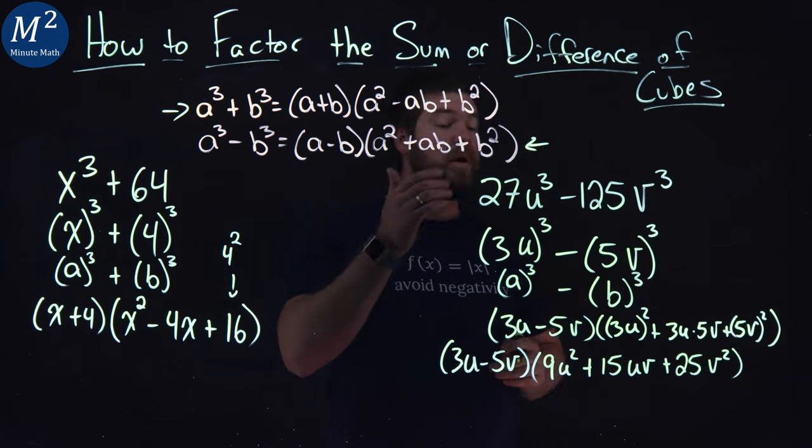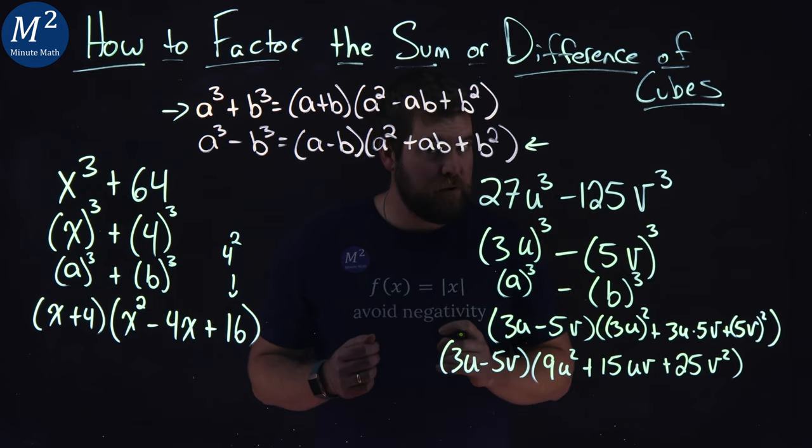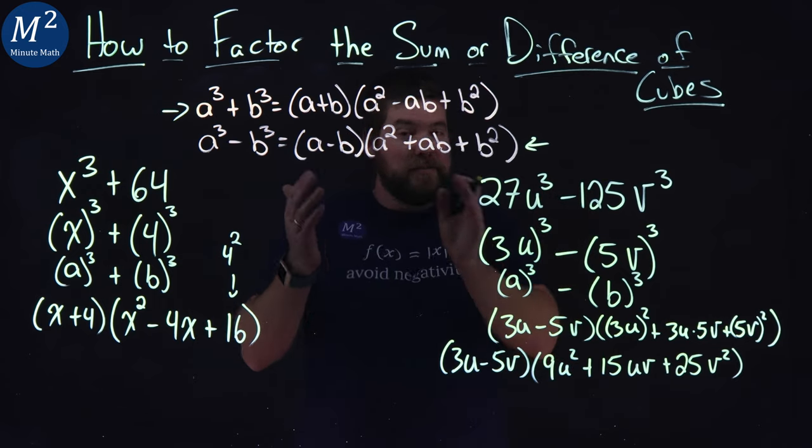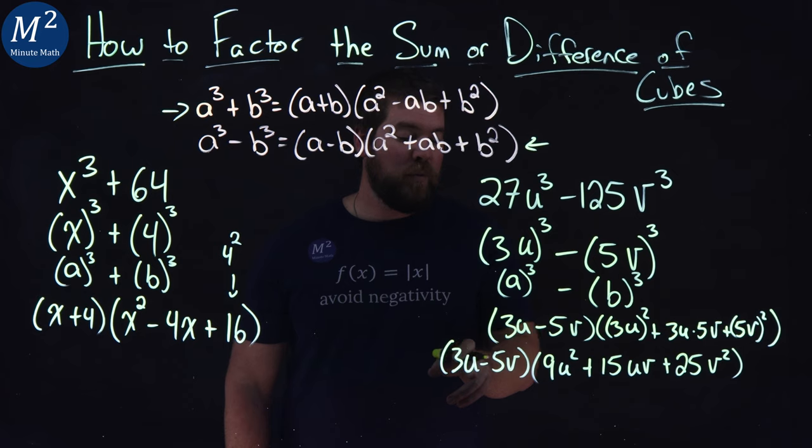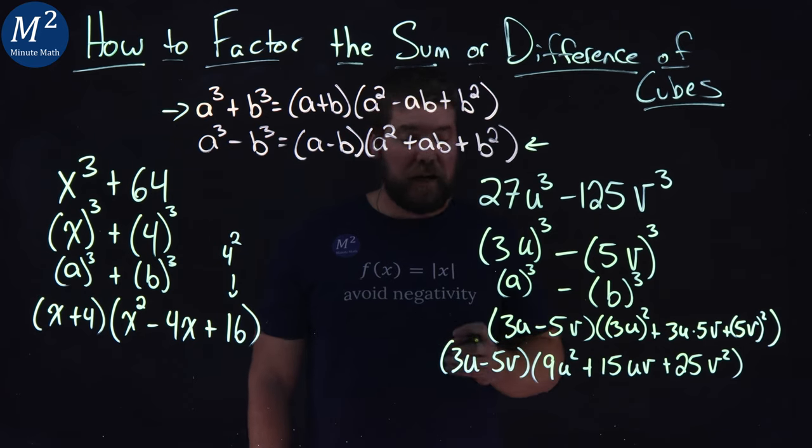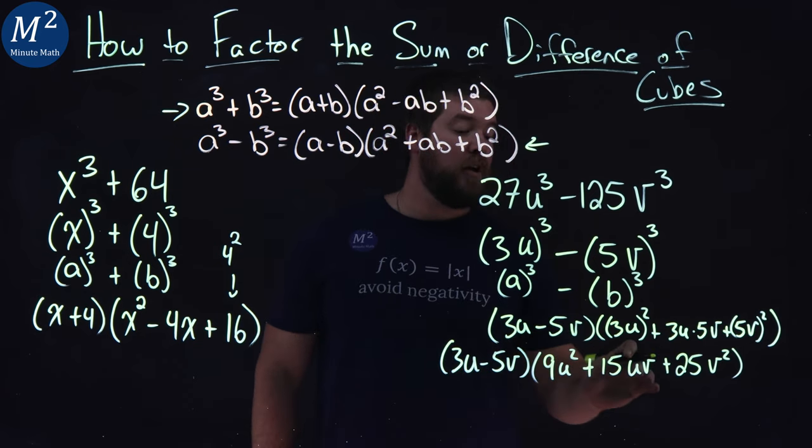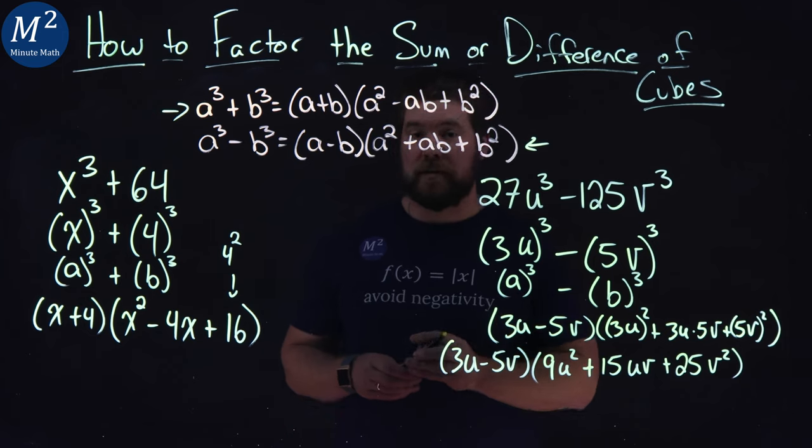And so our 27u cubed minus 125v cubed simplifies using our formula here to be 3u minus 5v times a 9u squared plus a 15uv plus 25v squared.